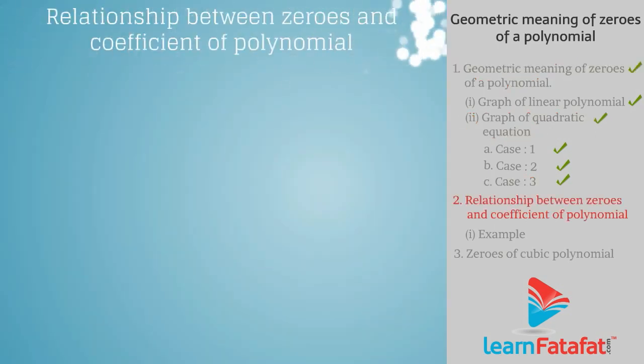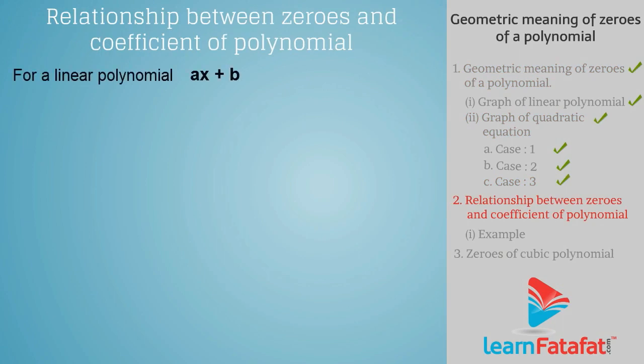Relationship between zeros and coefficients of a polynomial. For a linear polynomial ax + b, the zero is -b/a.